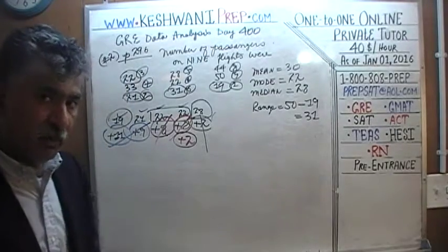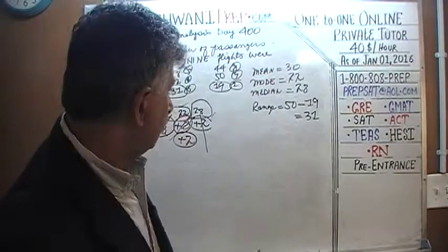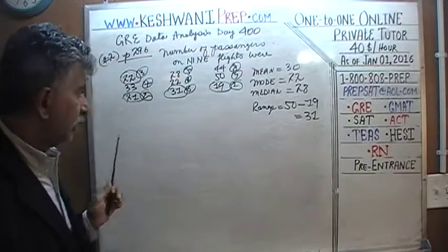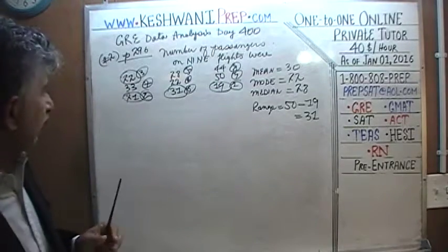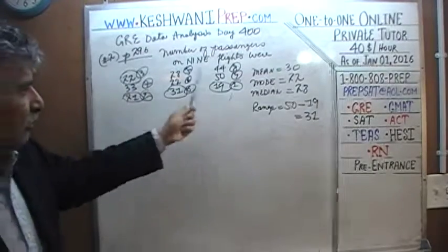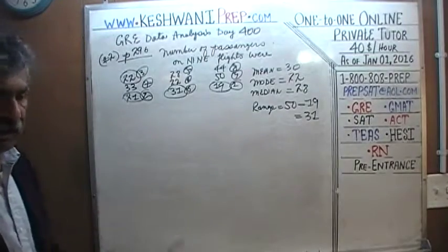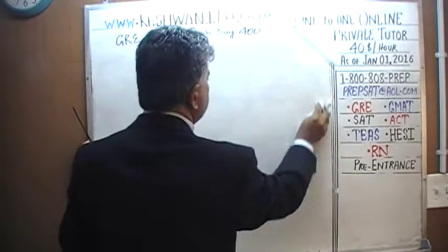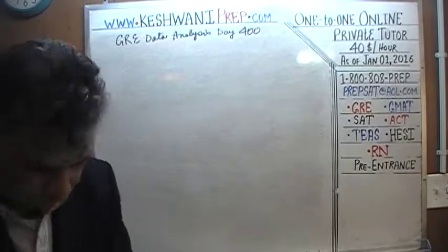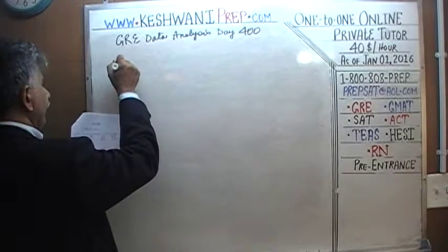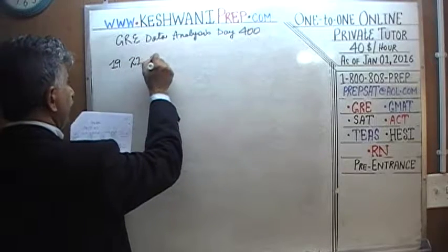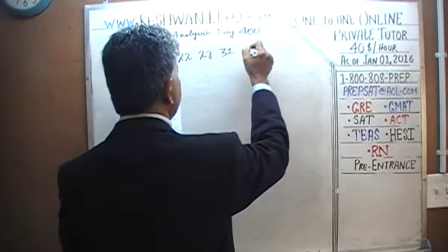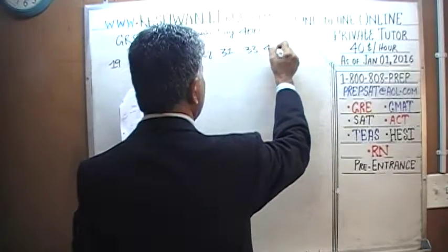Next we calculate the interquartile range. We need to put the observations in order again: 19, 21, 22, 22, 28, 31, 33, 44, and 50. We'll display the interquartile range on top and the box-and-whisker plot at the bottom at the same time.